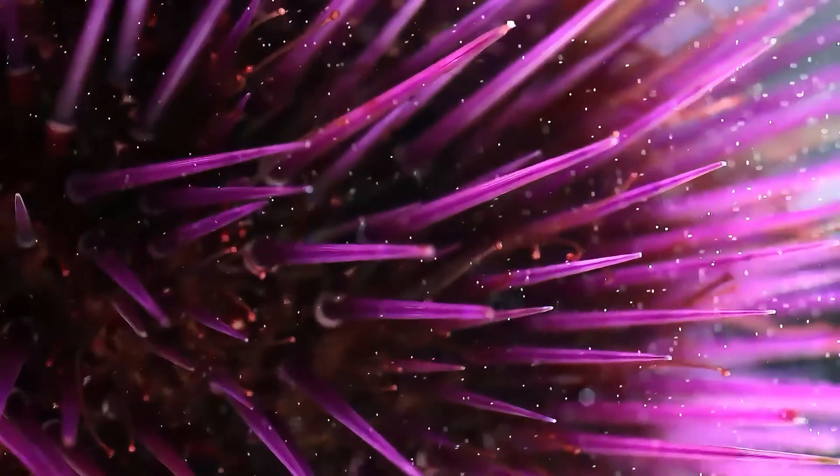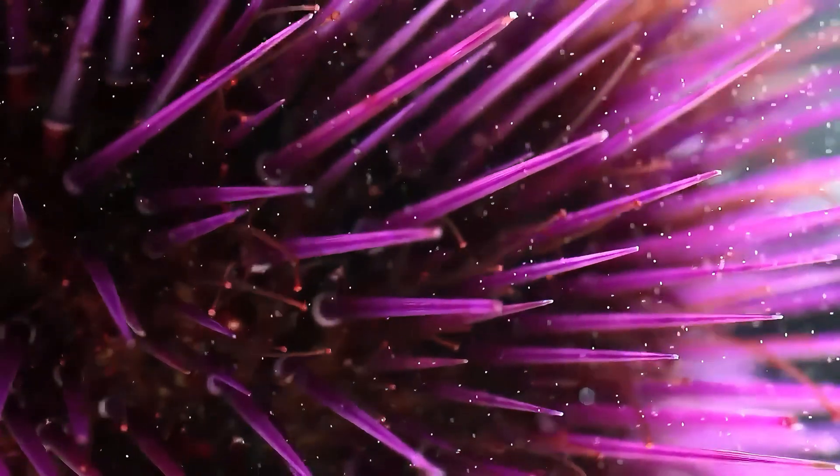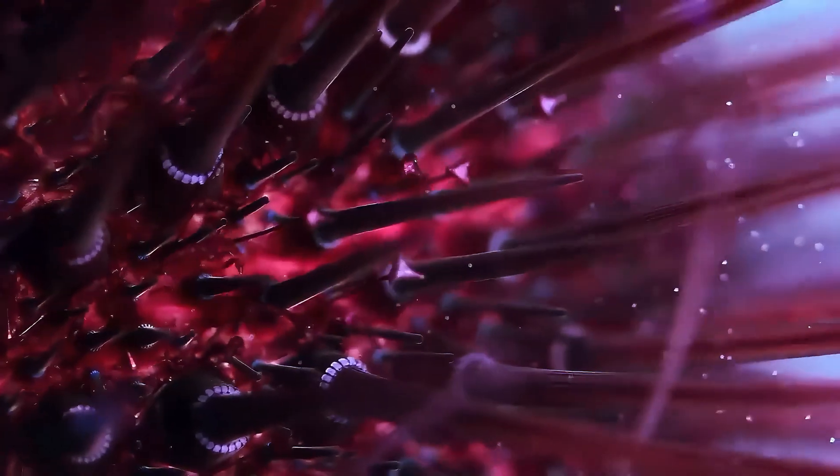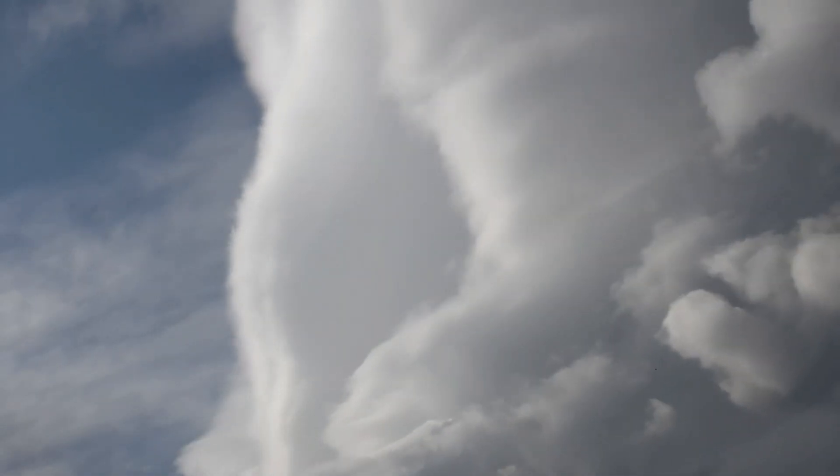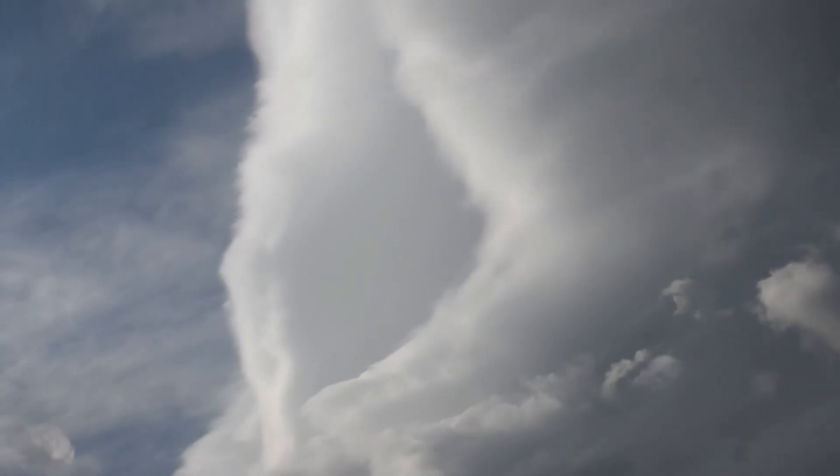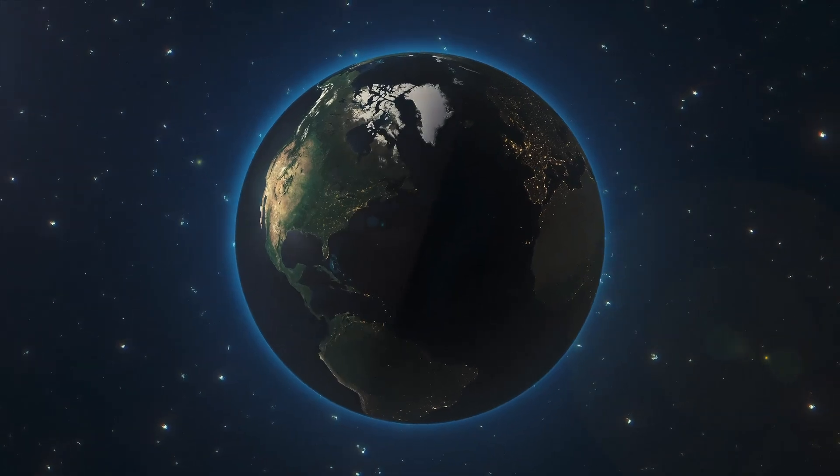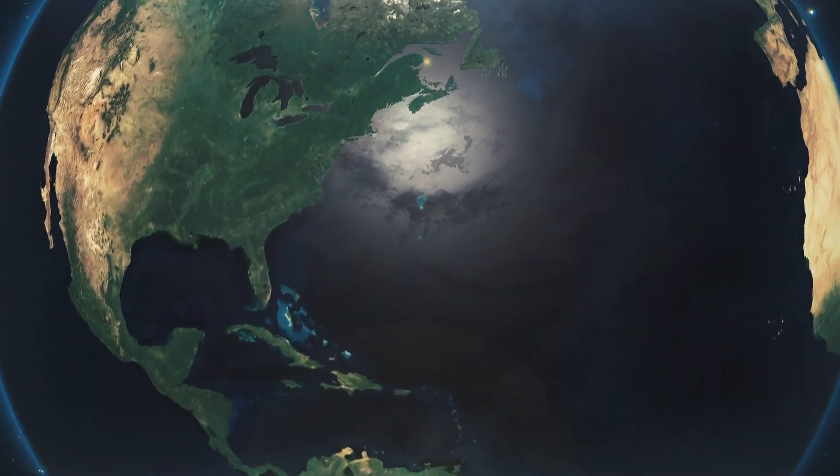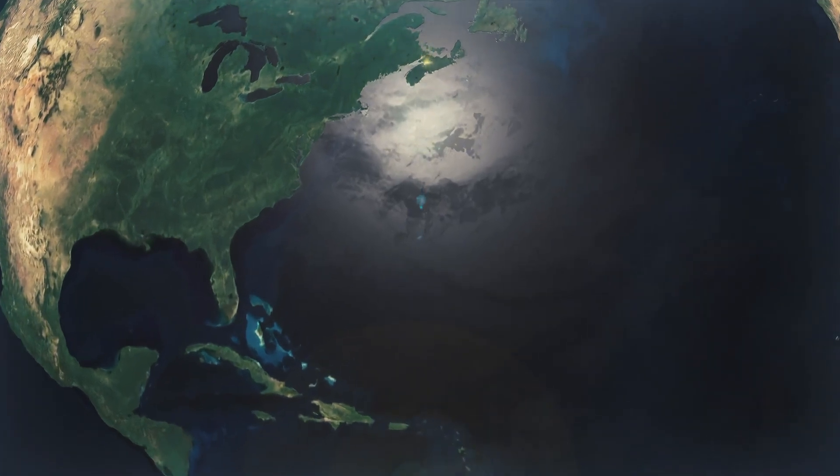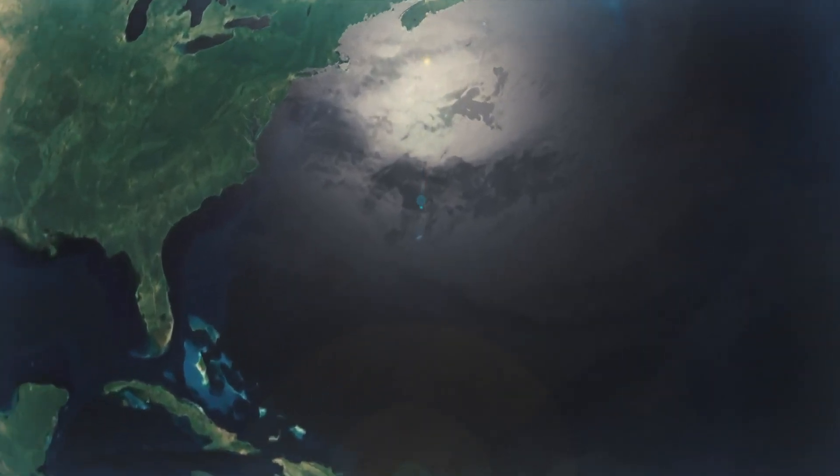Through a process known as photosynthesis, certain bacteria began to harness the energy of the sun, producing oxygen as a byproduct. This oxygen began to accumulate in the atmosphere, leading to a major transformation: the Great Oxidation Event. This event dramatically altered Earth's atmosphere, and made it possible for more complex life forms to evolve.